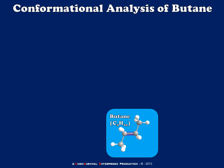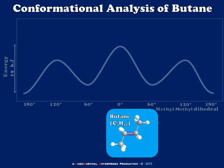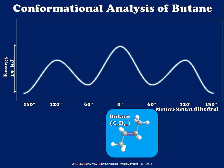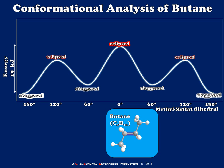If I site along this axis, notice that each carbon will have two hydrogen and one methyl substituent. When I do my conformational analysis, what I see is a conformational energy diagram that looks something like this — very similar to ethane in the sense that there are local minima and maxima, which correspond to staggered and eclipsed conformers.